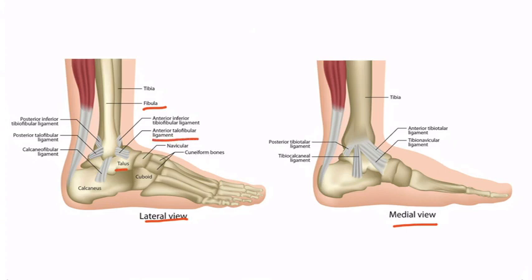Likewise, the ligament that runs between the fibula and calcaneus is called the calcaneofibular ligament. We can see many other ligaments here, including the anterior inferior tibiofibular ligament, which is the other ligament we discussed on the last slide. From the medial view, you can see several other ligaments which we've included for completeness sake, but these are less commonly injured, so we won't spend any more time discussing them.